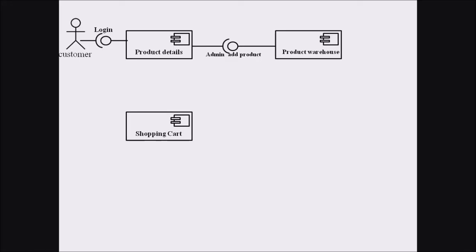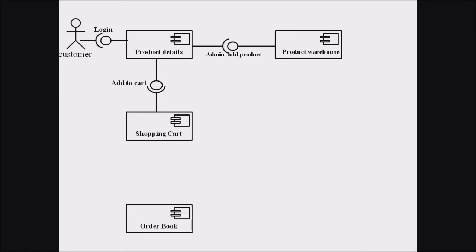Now we move to the shopping cart. Shopping cart is also dependent upon the product detail component. Product detail is providing service towards the shopping cart, and the shopping cart is receiving that interface. A customer can add particular products towards the shopping cart by selecting through the product detail component.